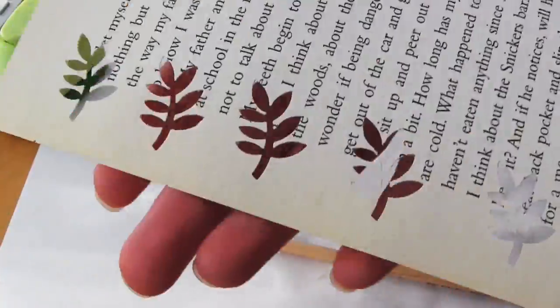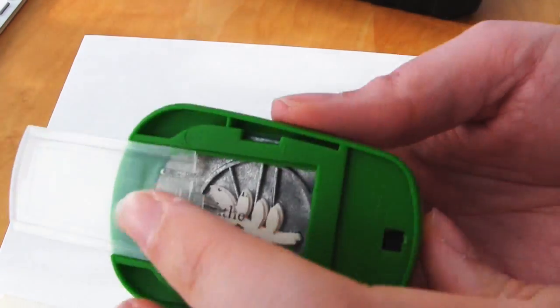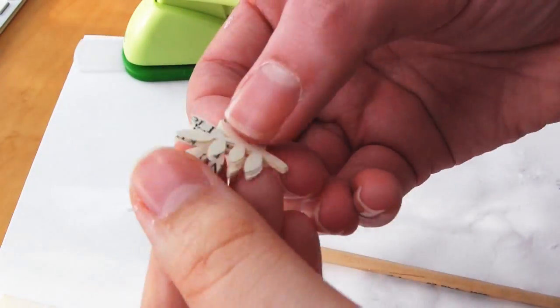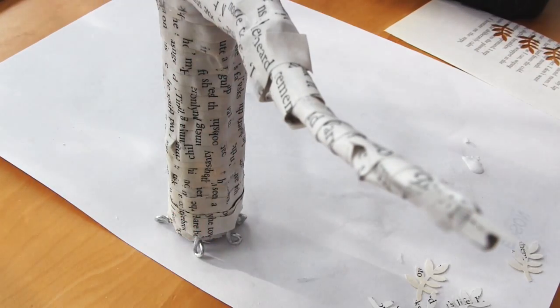Otherwise you're going to have to cut these out by hand, and that's going to take you some time. So what I did was I used my leaf punch on the book pages and just cut out loads and loads of leaf shapes.